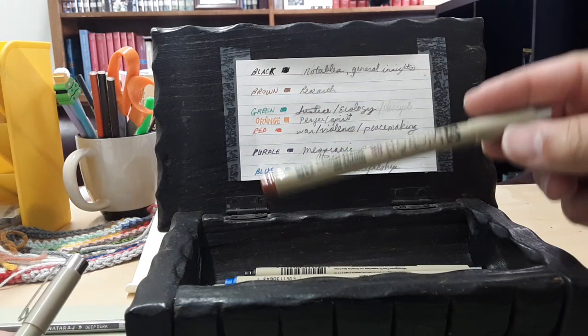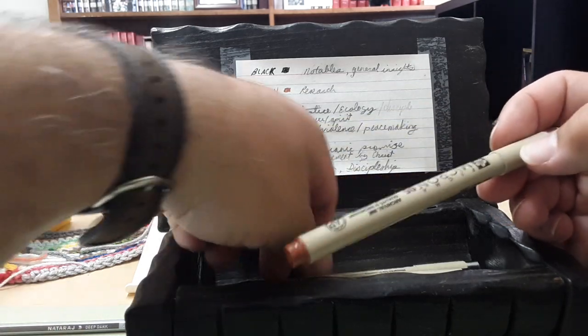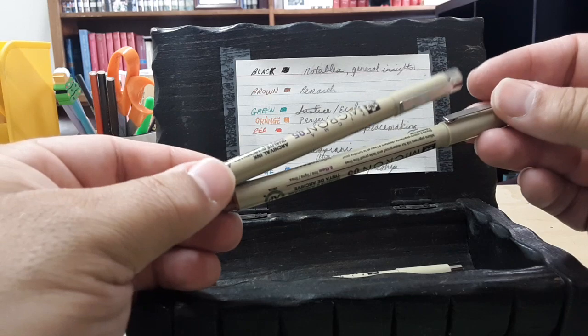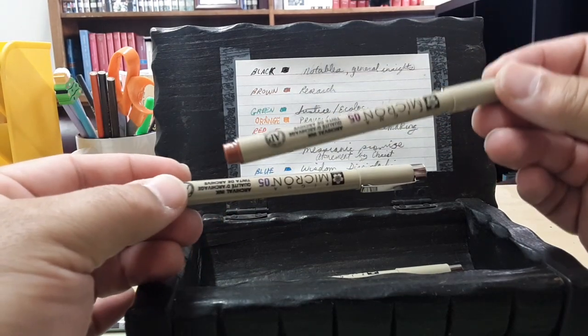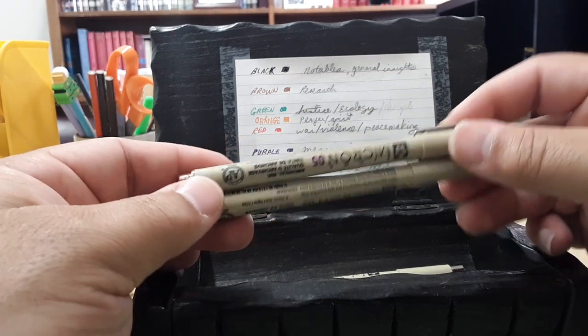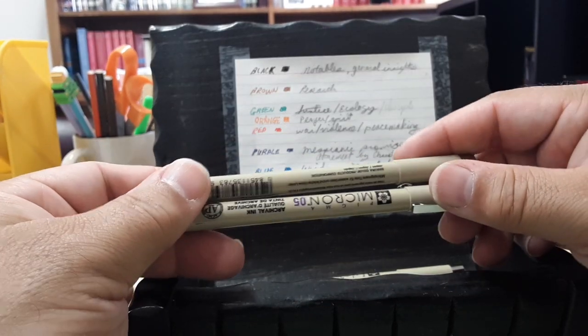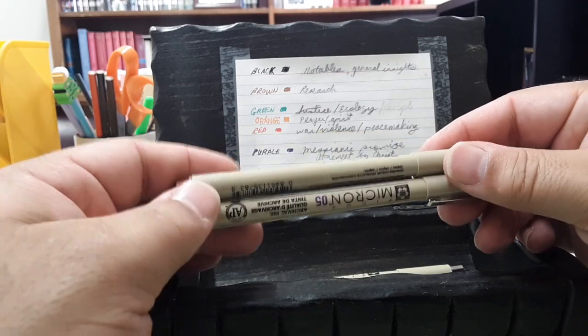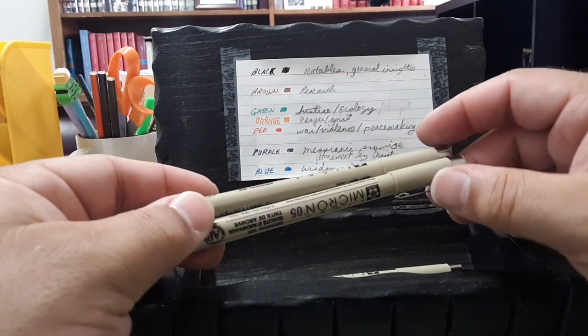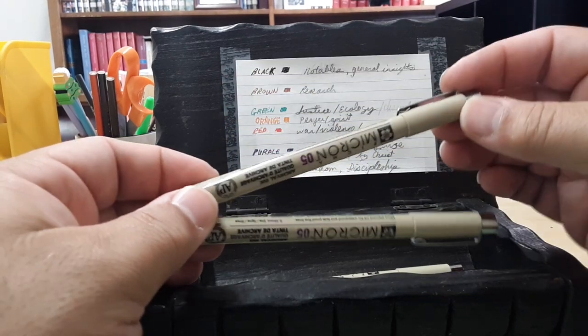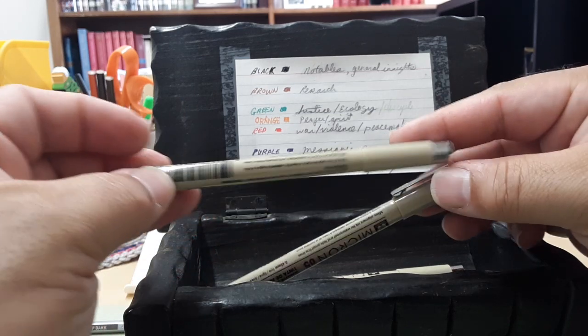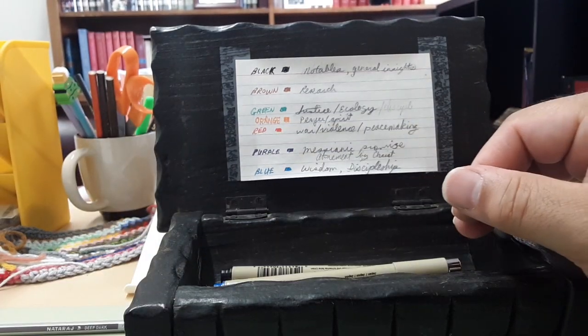So we have here Brown. Brown is research. Now, what differentiates Brown and Black? Because Black is general insights. Brown is when I've researched a passage and I have an insight that is unique to that particular passage. So if I'm studying or doing an exegesis on a passage of scripture, and there's a note that's specific to that, I'll use Brown to show that it's researched, it's from an article or a book, whereas Black is just that catch-all insight stuff.